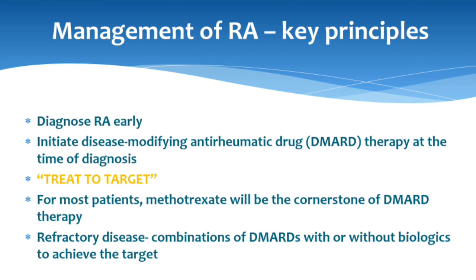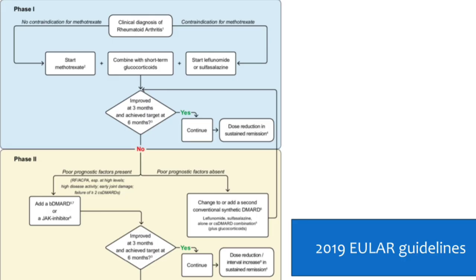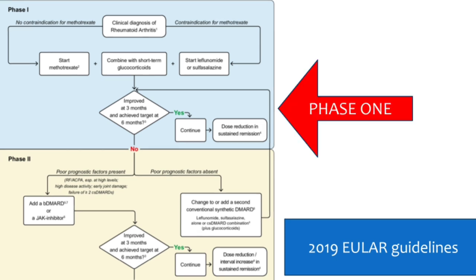Looking at the 2019 EULAR guidelines: once you have diagnosed rheumatoid arthritis and there is no contraindication to methotrexate, we start methotrexate. We can combine it with short-term glucocorticoid — called bridge therapy. In practice, we would give injection methylprednisolone acetate 80 mg intramuscularly weekly for four weeks along with methotrexate. Methotrexate can start at 10 mg, increased after two to four weeks to 15 mg and further if needed.